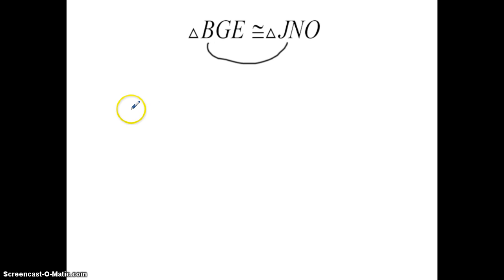So you could say from this that angle B is congruent to angle J. You could also say angle G is congruent to angle N. And finally, you could say that angle E is congruent to angle O.